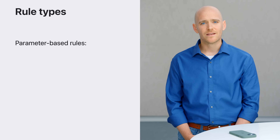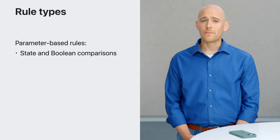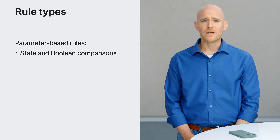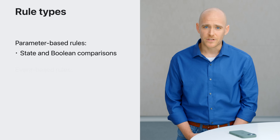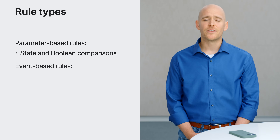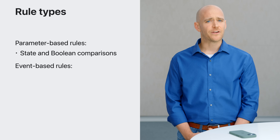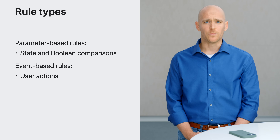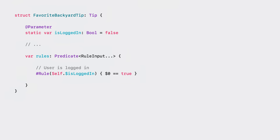There are two main types of rules. The first is a parameter-based rule. Parameter-based rules are persistent and are best suited for showing tips based on a Swift value type that you want to write an expression around. The second is an event-based rule. Event-based rules allow you to define an action that must be performed before a person becomes eligible for a tip. For my favor to backyard tip, the first thing I want to do is to make sure the person is logged into their account. I'll implement a parameter-based rule to accomplish that. First, I'll set the parameter's initial value to false. Then, I'll add this to the tip's rules.